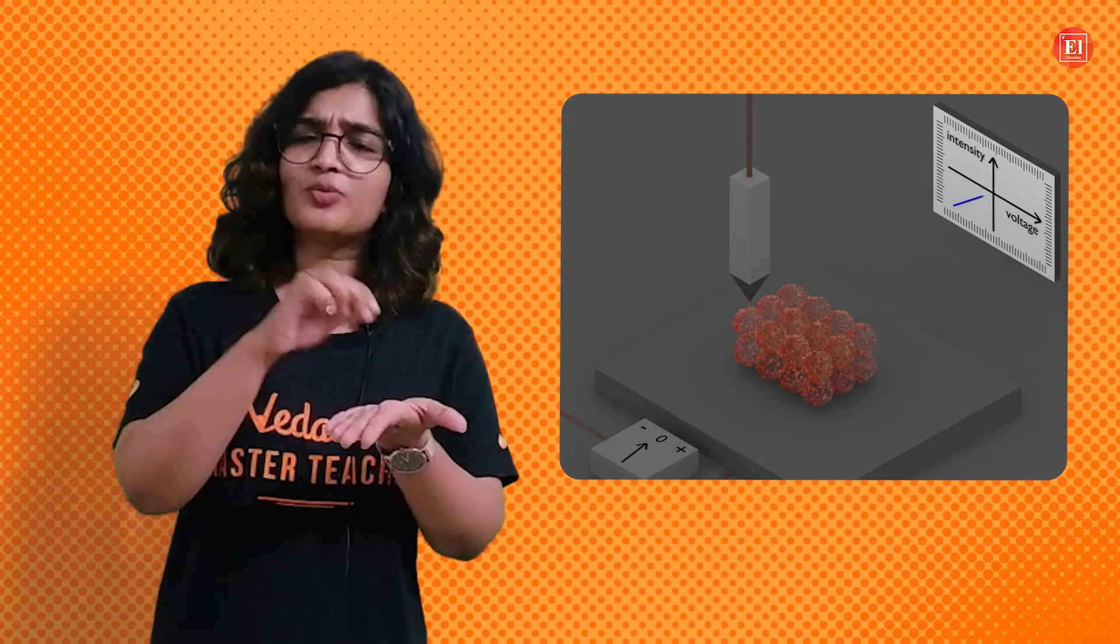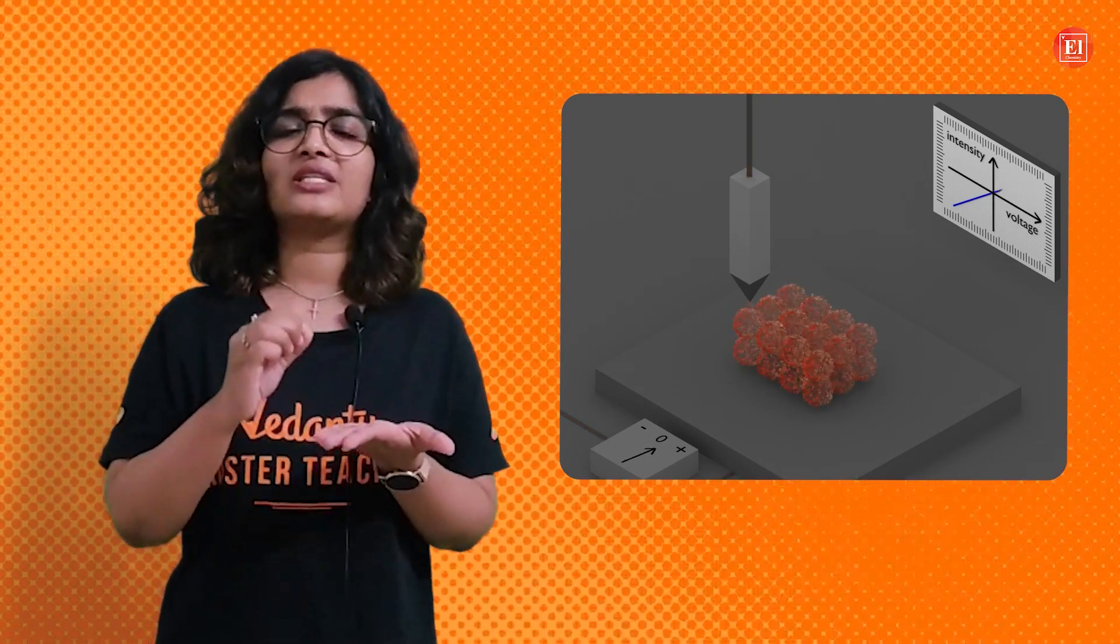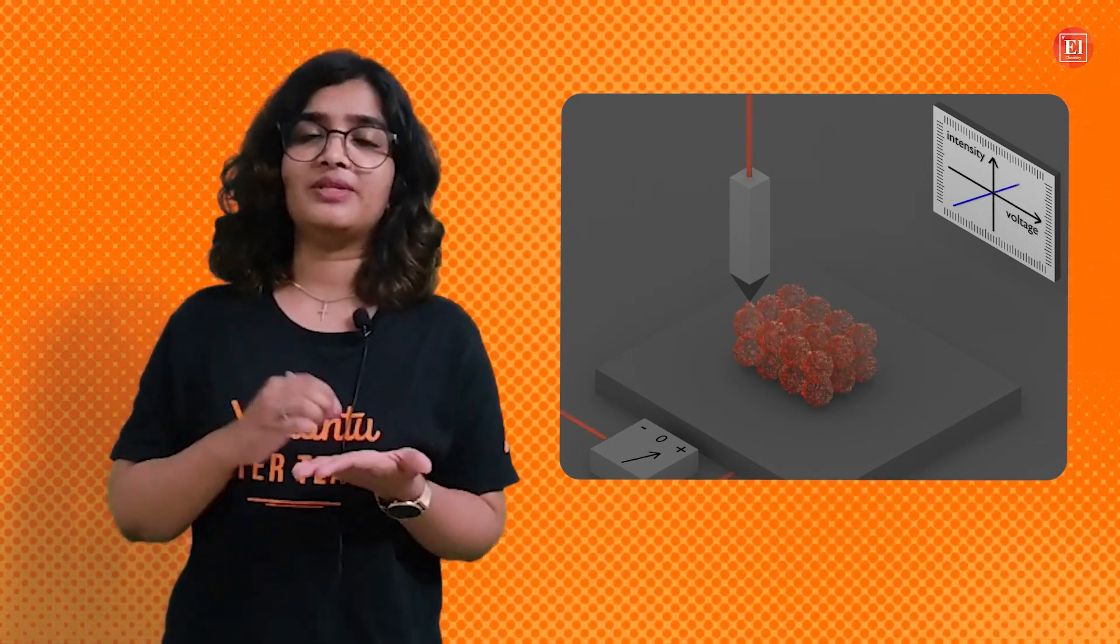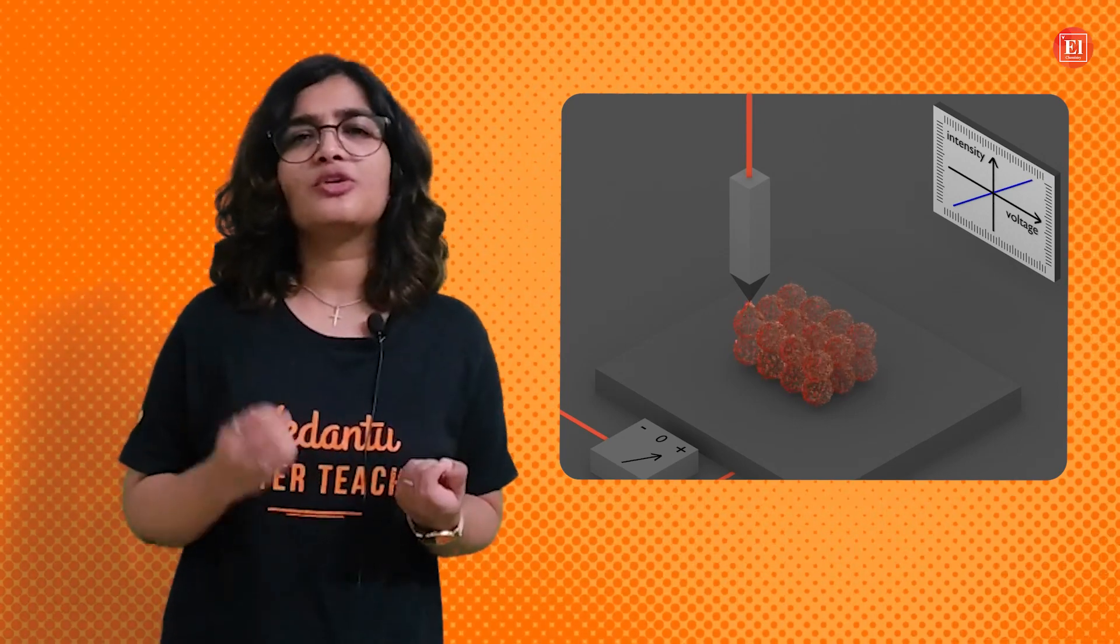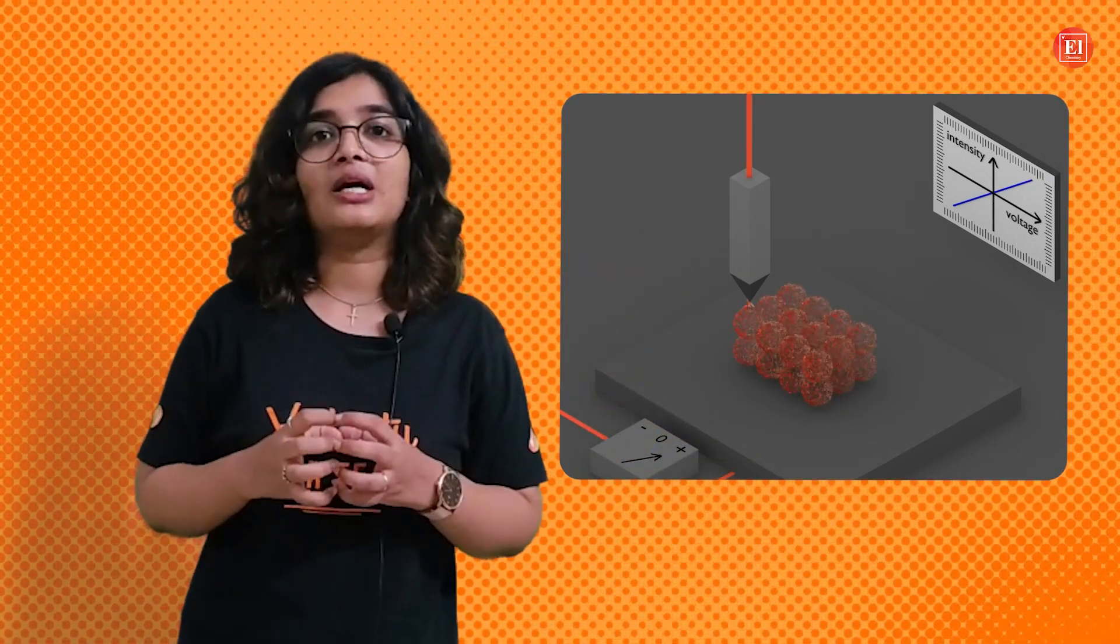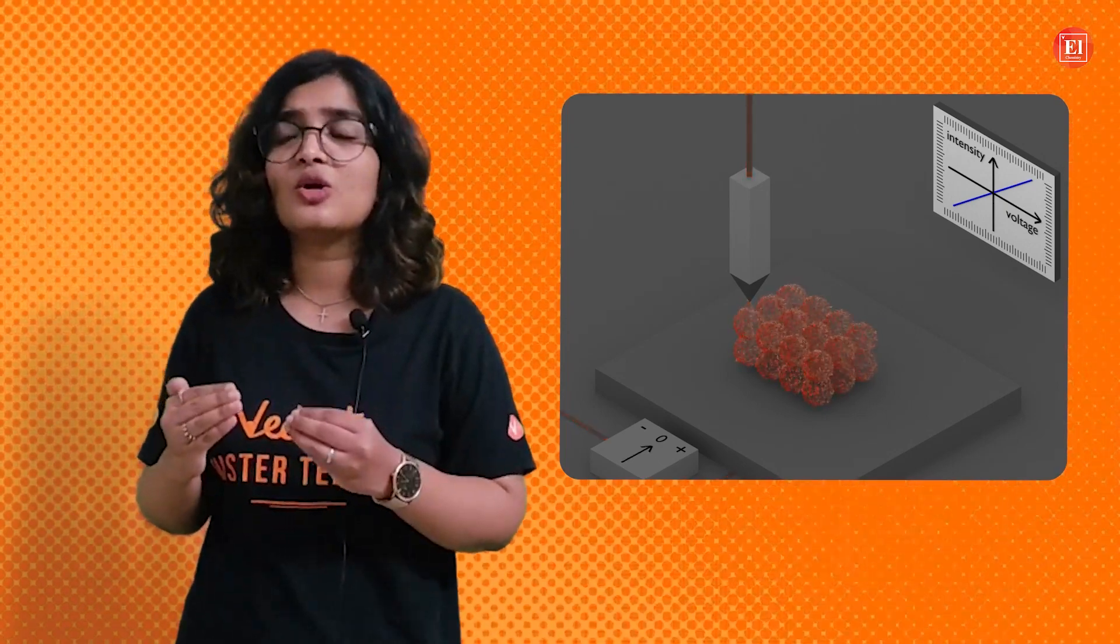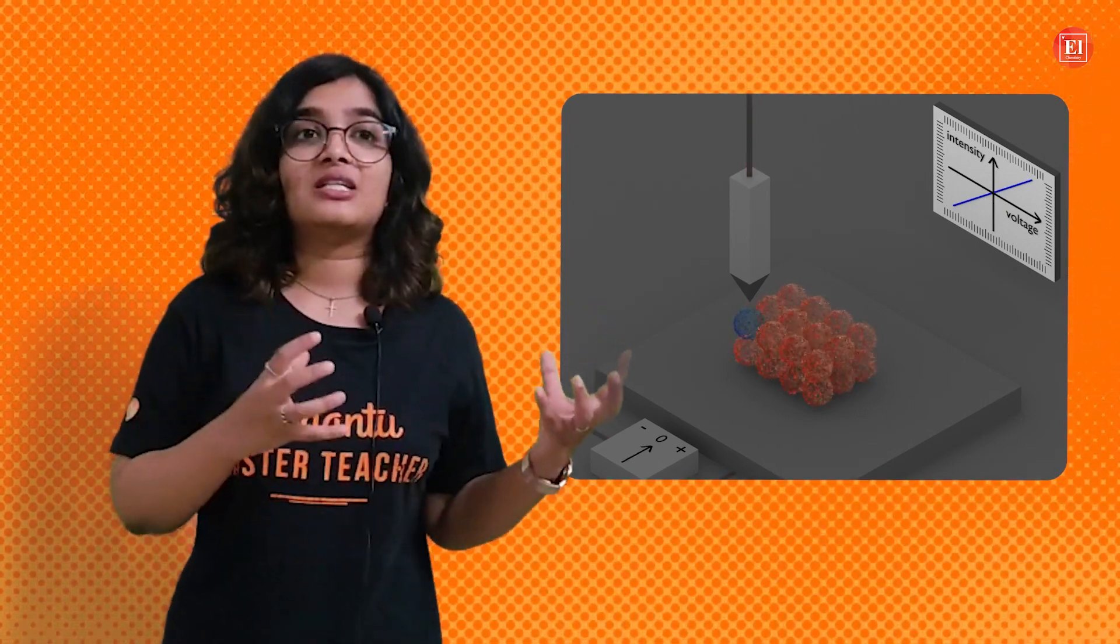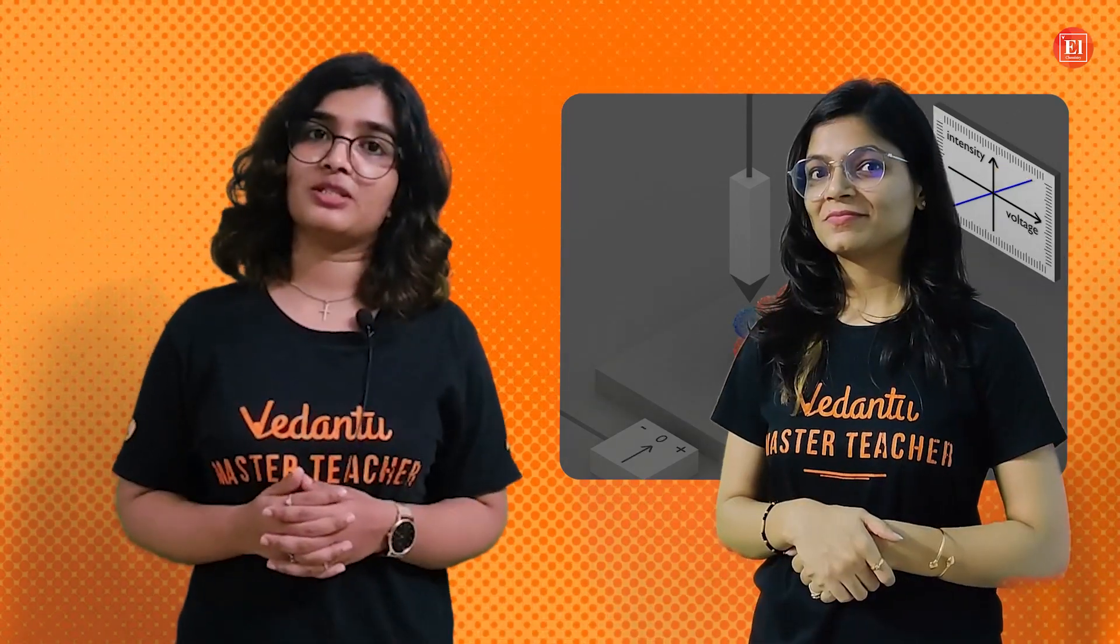The scanner continues to position the tip over each XY point of the sample surface, registering a current for each point. Then the computer will collect all the data and plot a map of current over the surface that corresponds to the map of the atomic positions.